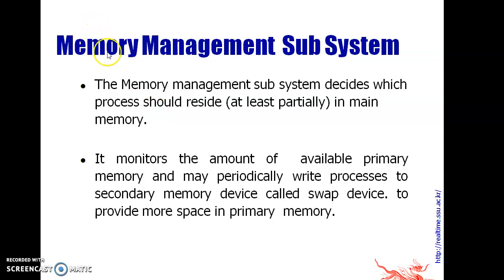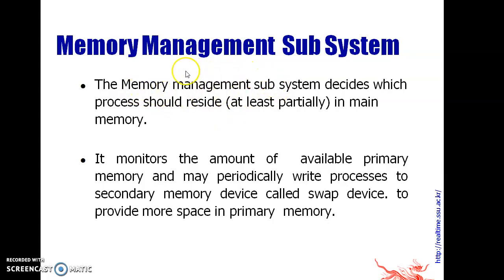The Memory Management Subsystem decides which process should reside in Main Memory. Its purpose is to decide which process will reside in Main Memory and which will reside on the Swap Space. It acts like a Manager — it manages the space on Primary Memory and monitors the amount of available Primary Memory, periodically writing processes to the Secondary Memory device called the Swap Device to provide more space in Primary Memory.